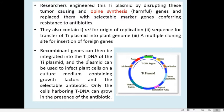Foreign genes can be incorporated into the T-DNA of the Ti plasmid, and then the plasmid can be used to infect plant cells on a culture medium containing growth factors and the selectable antibiotic. Since the antibiotic resistance gene is used as the marker, only those cells which harbor the T-DNA can grow in the presence of the antibiotic. This is how we generate Agrobacterium as a vector.